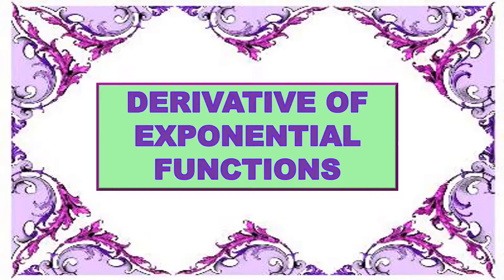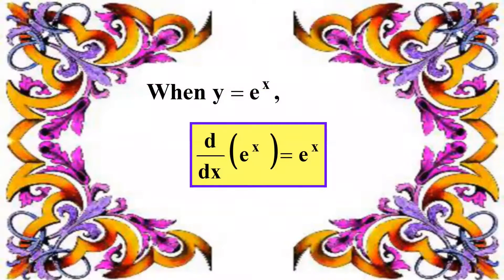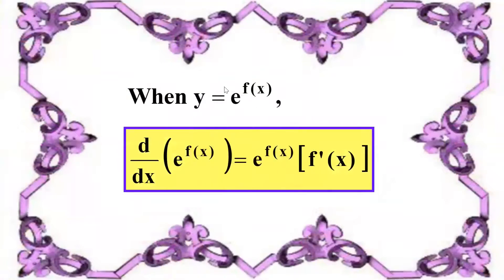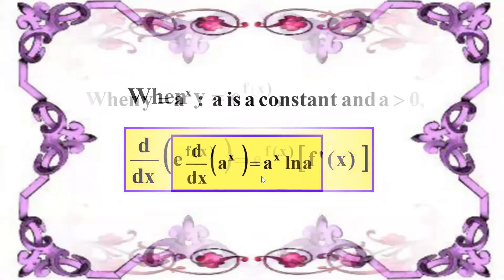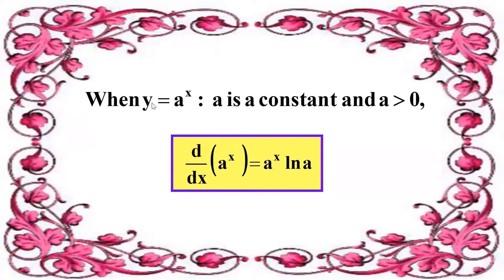There are a few formulas you need to remember. The first one is when y equals e^x — when we differentiate it, we just copy the whole thing back. If the power given is a function, we copy the whole thing e^(f(x)), differentiate the function, and put it at the side.